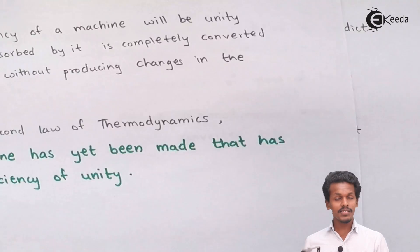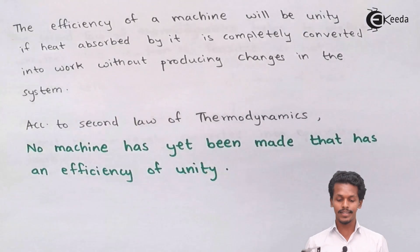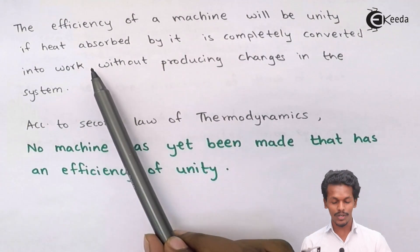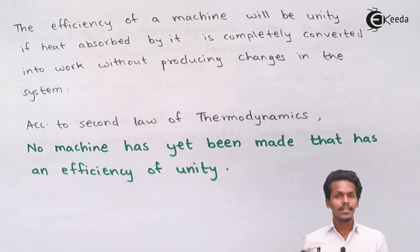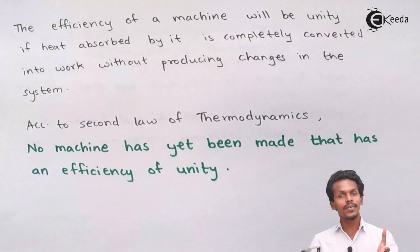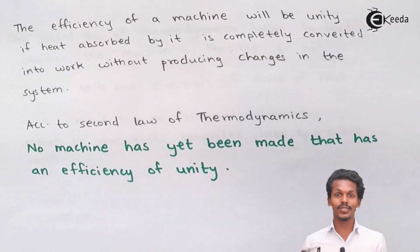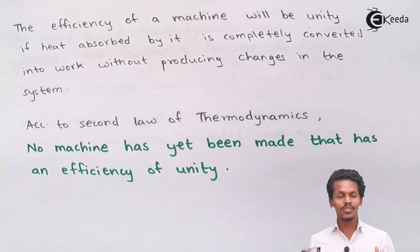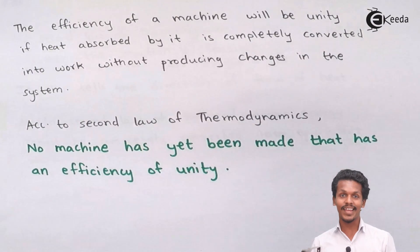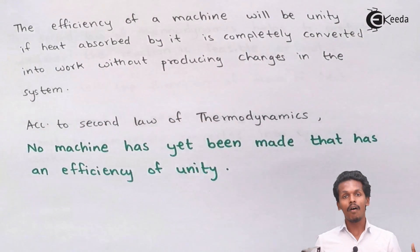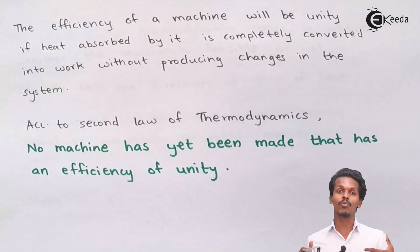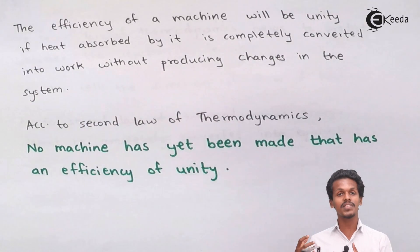Another way to express this is: the efficiency of a machine would be unity only if the heat absorbed by it is completely converted into work without producing any changes in the system. However, we could not convert heat completely to equivalent work energy. No machine we are familiar with shows an efficiency of one, because all the heat energy supplied to the system is not 100% converted to work — it gives less than 100%, and there will be certain permanent changes.